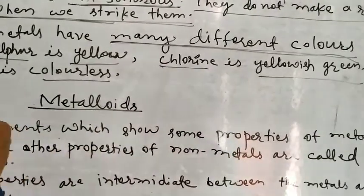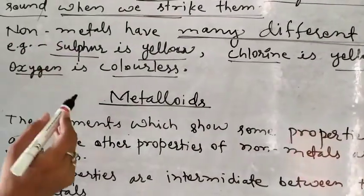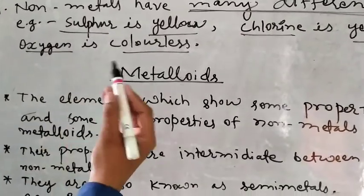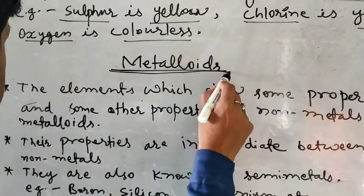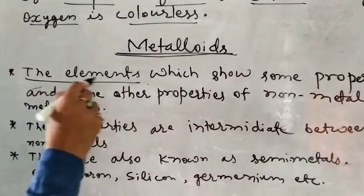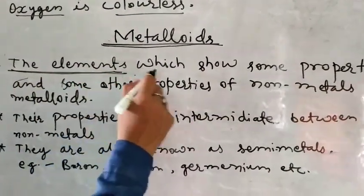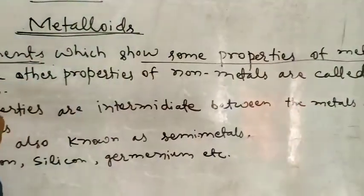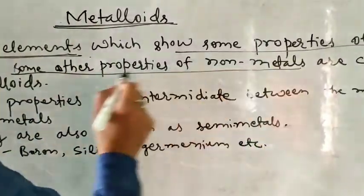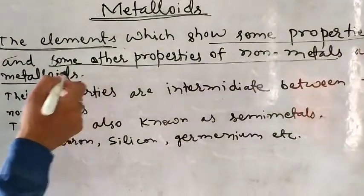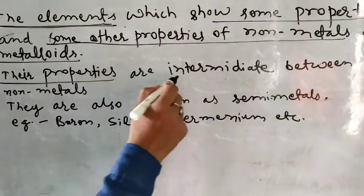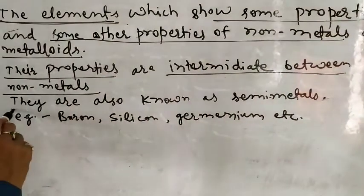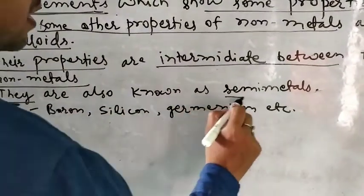So, the properties of non-metals are concluded here. Now we have another group of elements that are between non-metals and metals, known as metalloids. Metalloids are elements which show some properties of metals and some properties of non-metals. Their properties are intermediate between metals and non-metals, and they are also known as semi-metals.